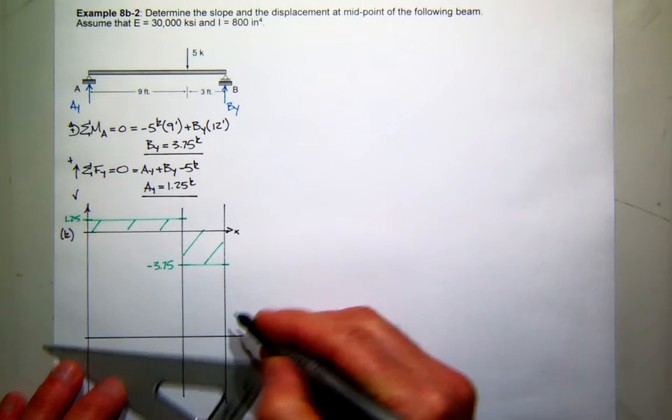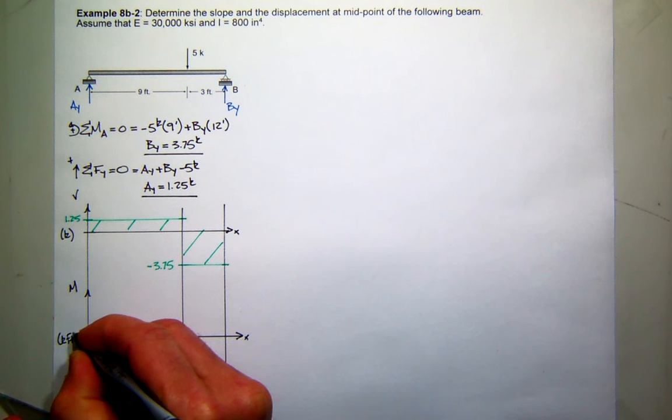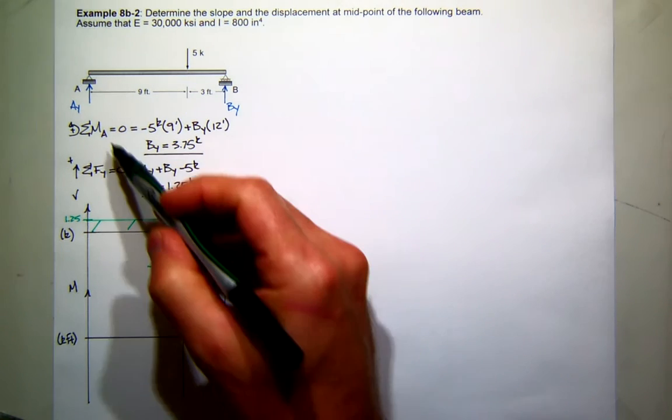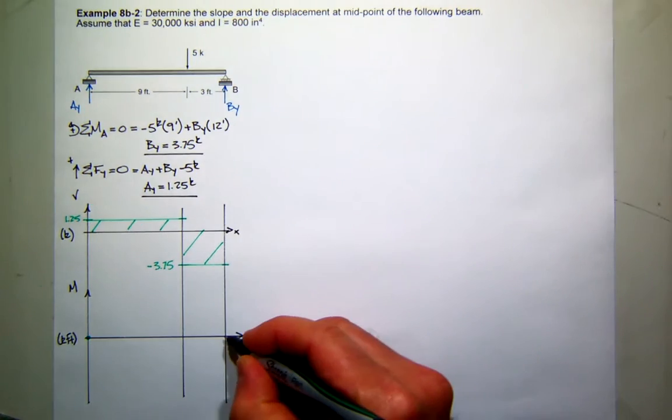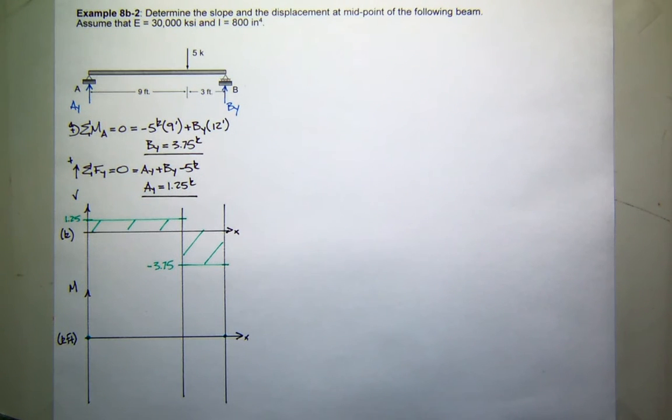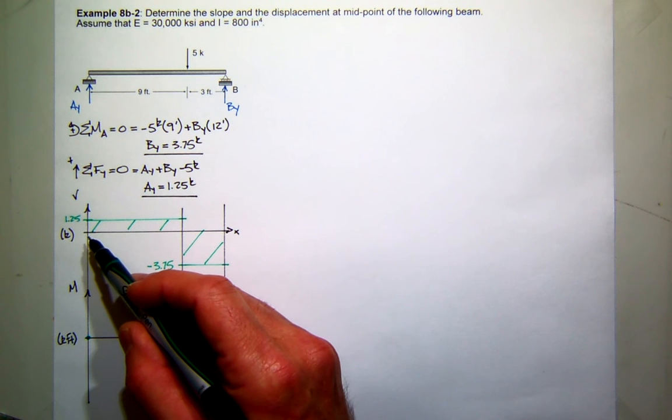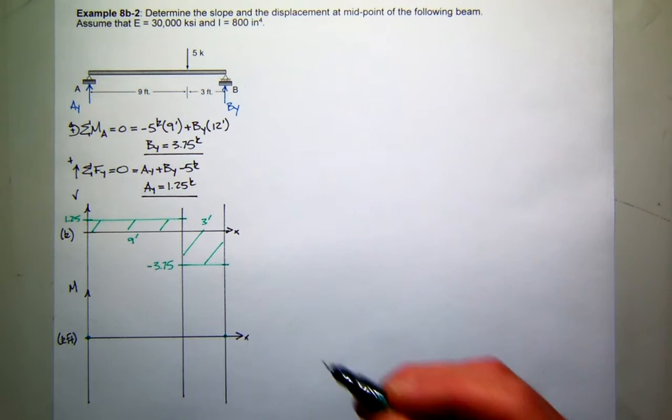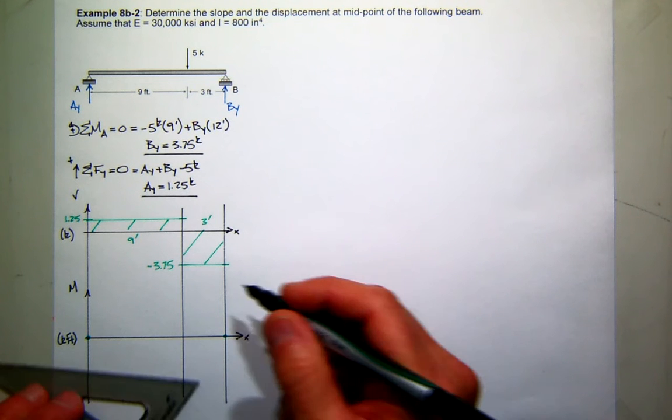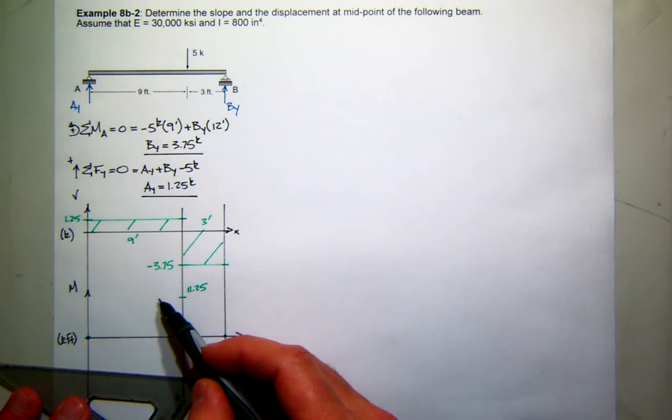I'll establish positive x-axis for positive moment. All my units will be kip feet. What is the moment at A? 0. And what's the moment at B? Also 0. So I have a starting and an ending point. The change in moment between any two points is the area in the shear diagram. So let's use this area under the first 9 feet. It's a rectangle, so 9 times 1.25 is 11.25.